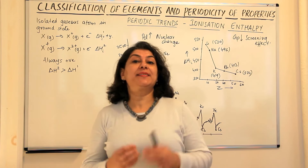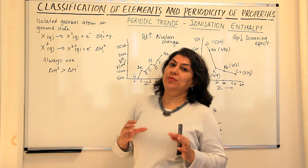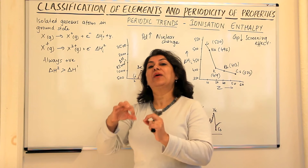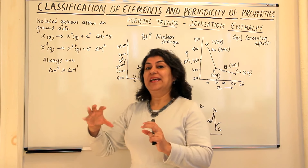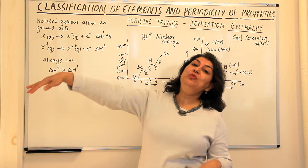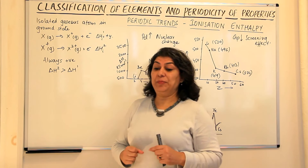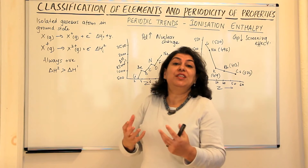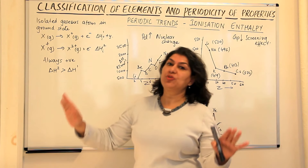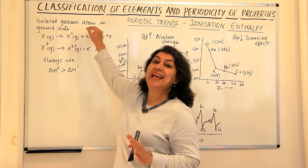What is ionization enthalpy? If you take an isolated gaseous atom of an element in its ground state and you try to remove the most loosely bound electron in that, the amount of energy that you use to remove that outermost electron is known as the ionization enthalpy. It is the amount of energy that you need to snatch away an electron from an atom — the outermost electron of an isolated gaseous atom.